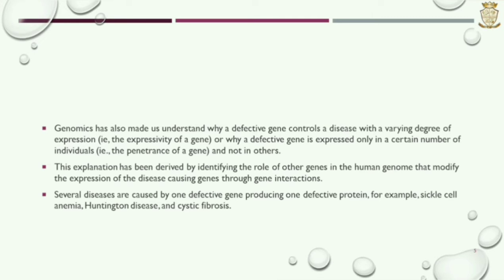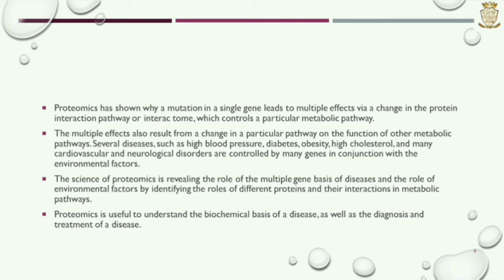Several diseases are caused by one defective gene producing one defective protein — for example, sickle cell anemia and cystic fibrosis. Proteomics has shown why a mutation in a single gene leads to multiple effects via a change in the protein interaction pathway, which controls a particular metabolic pathway. The multiple effects also result from a change in a particular pathway on the function of other metabolic pathways.